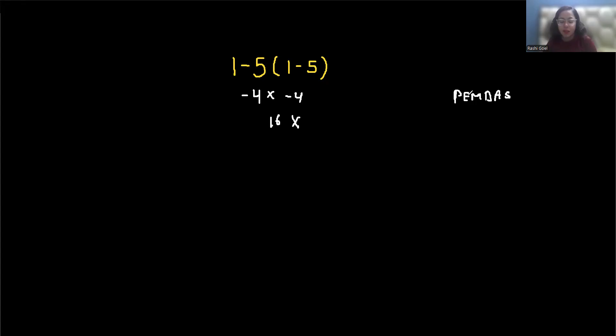Need to note that in mathematics when a number is placed next to parenthesis it means multiplication. So I'll write it: 1 minus 5 times 1 minus 5. We usually don't write the multiplication sign.